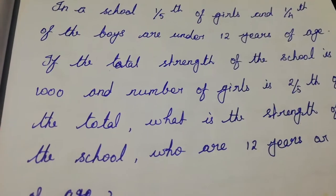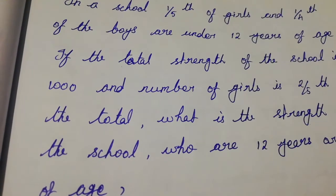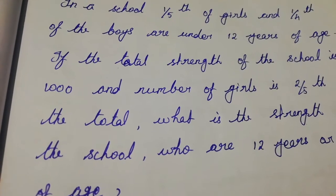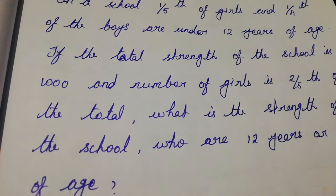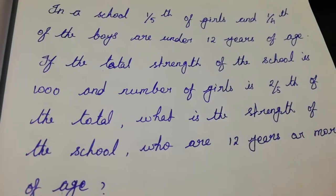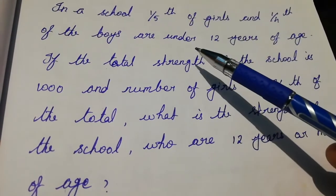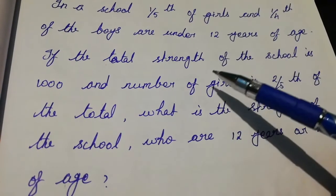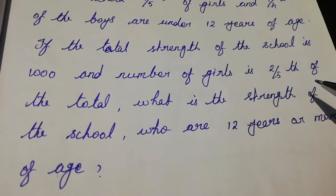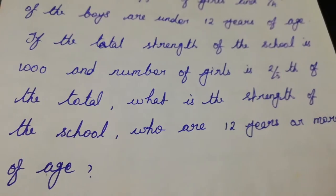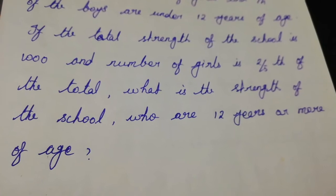Hello everyone, welcome to SJR Simple Maths. Today we are going to see a question that was asked in last year's TNTET paper 2, that is TNTET 2019. In a school, one-fifth of the girls and one-fourth of the boys are under 12 years of age. The total strength of the school is 1000 and the number of girls is two-fifth of the total.